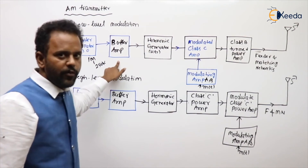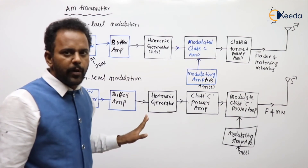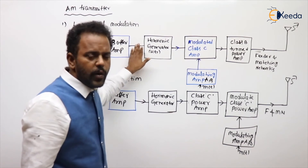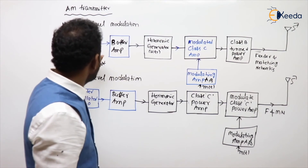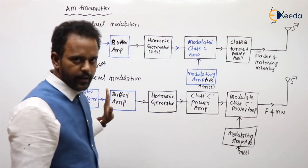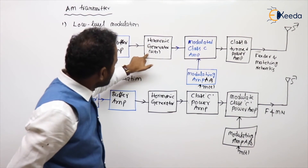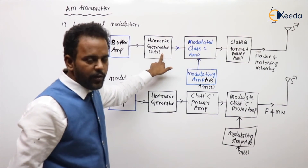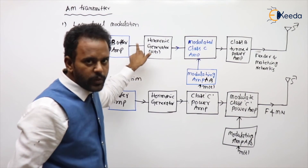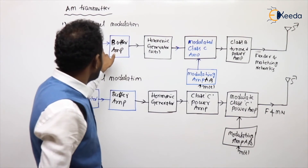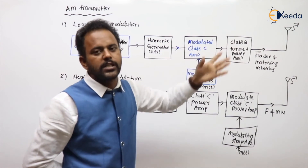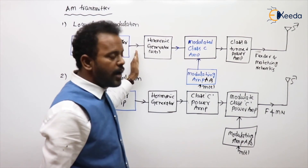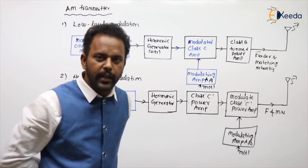The buffer amplifier should have high input impedance. Its function is to ensure that any load current changes or loading effect does not affect the master oscillator. Generally, the harmonic generator itself is used as the buffer amplifier, because the harmonic generator has high input impedance and its input tuning is different from its output tuning. The input is tuned to the master oscillator frequency while the output takes the harmonics, so both are at different frequencies, minimizing feedback.